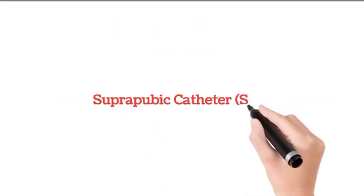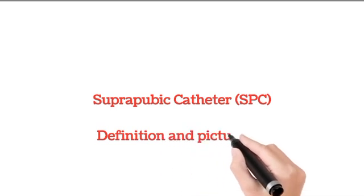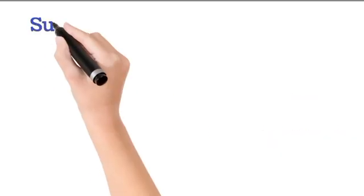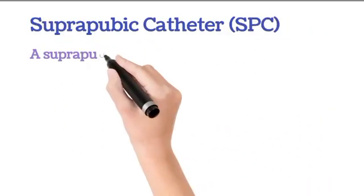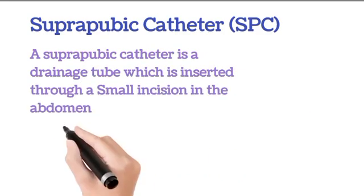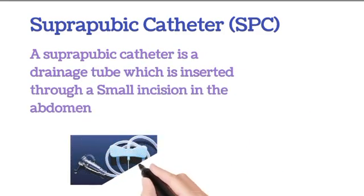Suprapubic catheter (SPC) definition and pictures: A suprapubic catheter is a drainage tube which is inserted through a small incision in the abdomen.